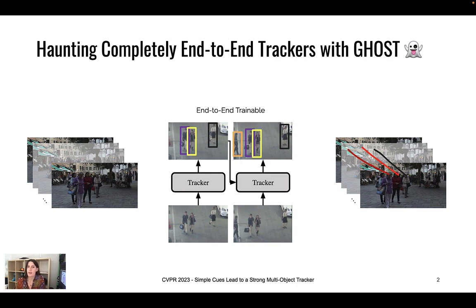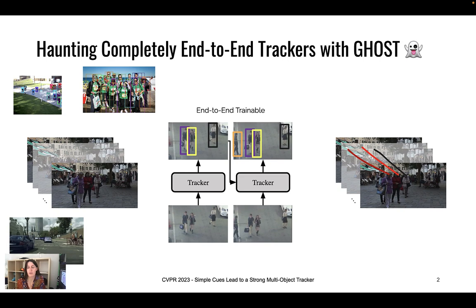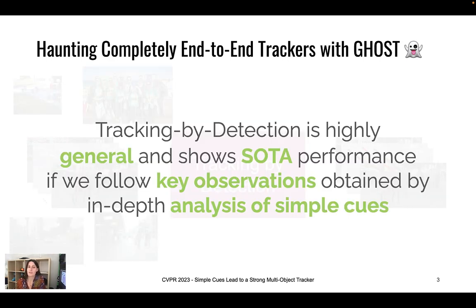In recent years, end-to-end trainable trackers entered the field. They directly take in the whole frame and predict the bounding boxes from this whole frame. They achieve state-of-the-art performance, but they require a high amount of training data as well as complex training strategies. We state that tracking-by-detection is highly general and still shows state-of-the-art performance if we follow key observations obtained by in-depth analysis of simple cues.